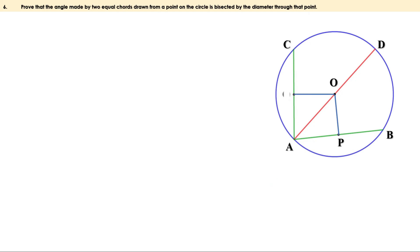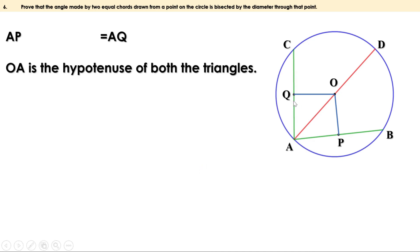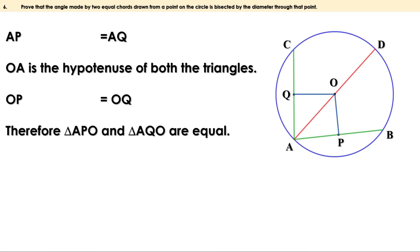Let O be the center. Draw perpendiculars from the center to the chords meeting them at P and Q. These are right-angle triangles because OP and OQ are perpendicular. Given AB and AC are equal chords, AP is half AB and AQ is half AC. Since AB and AC are equal, their halves are also equal, so AP equals AQ. The hypotenuse of both triangles is OA. Therefore the hypotenuse and base of triangle AQO equal the hypotenuse and base of triangle APO, so their altitudes are also equal — OP equals OQ. The three sides of both triangles are equal, so the triangles are equal.